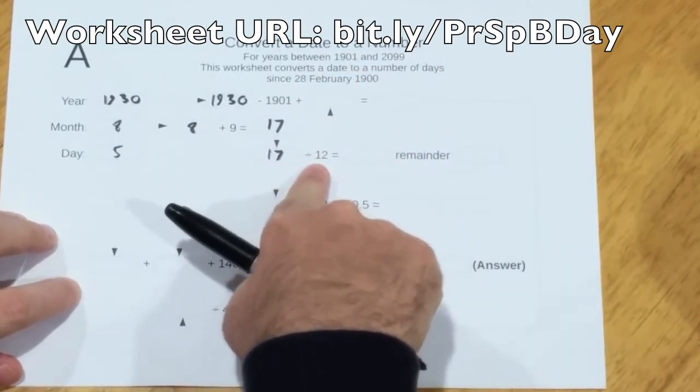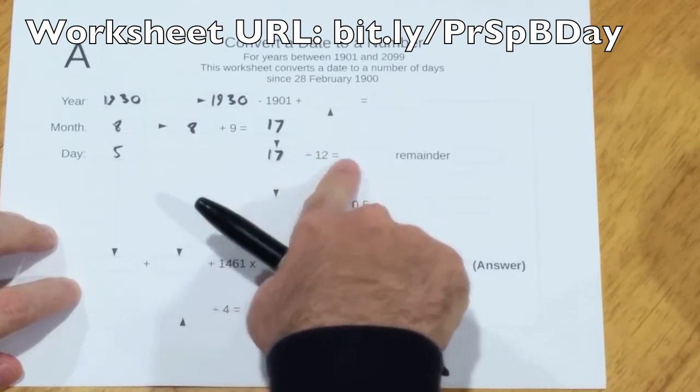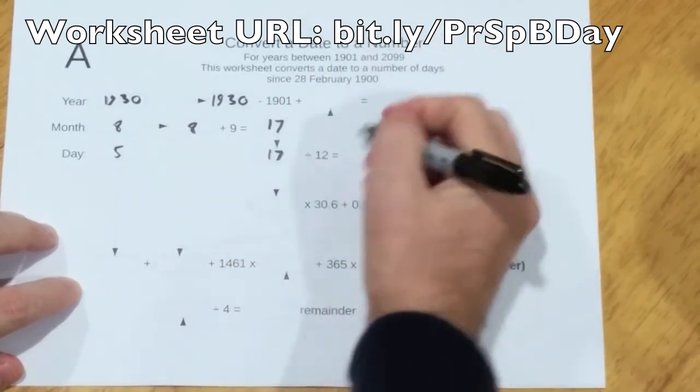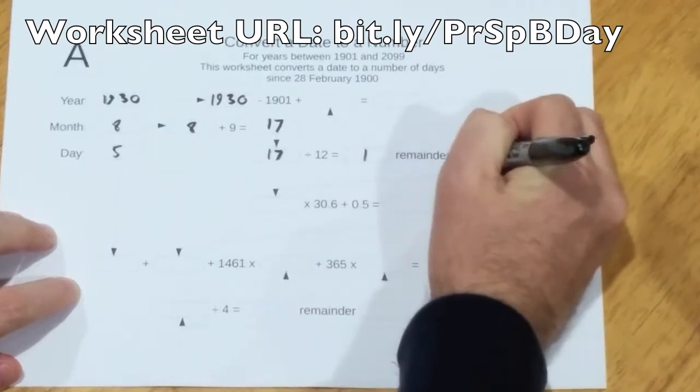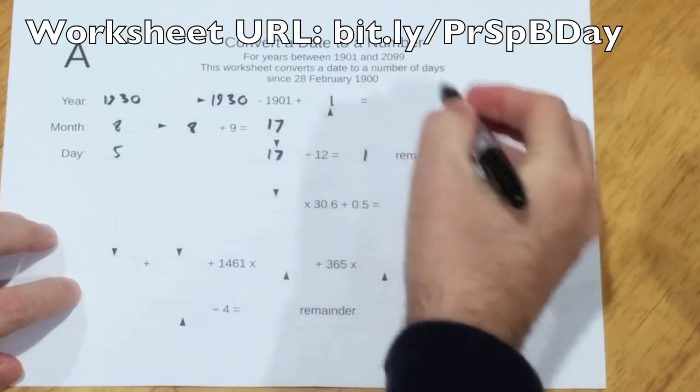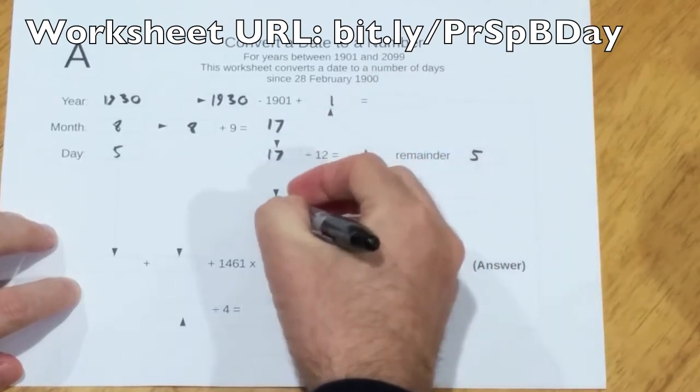Some of the division questions in the worksheet are division with remainder. So here's 17 divided by 12 is 1, remainder 5. Here we copy the 1 up there, and the 5 gets copied down here.